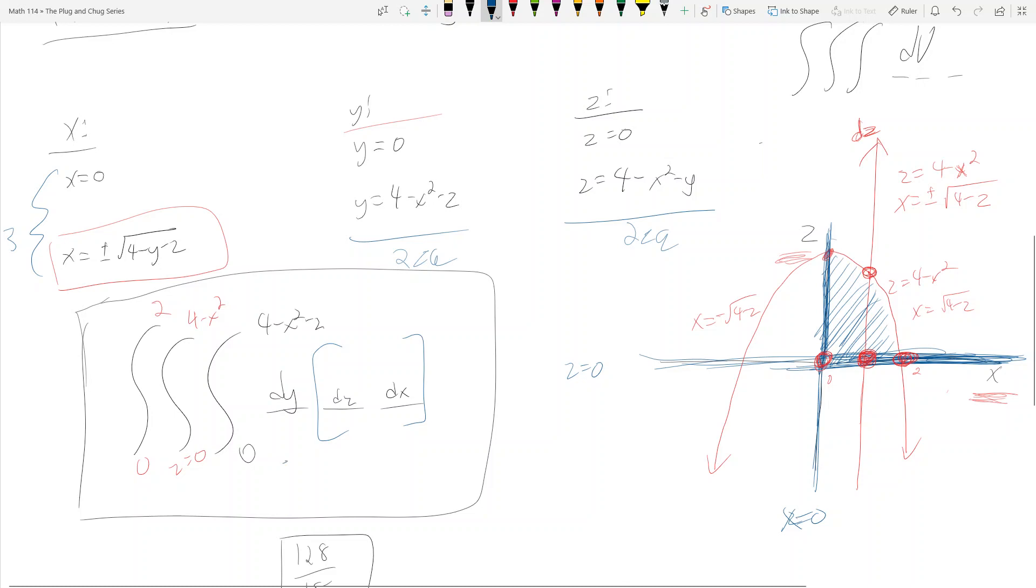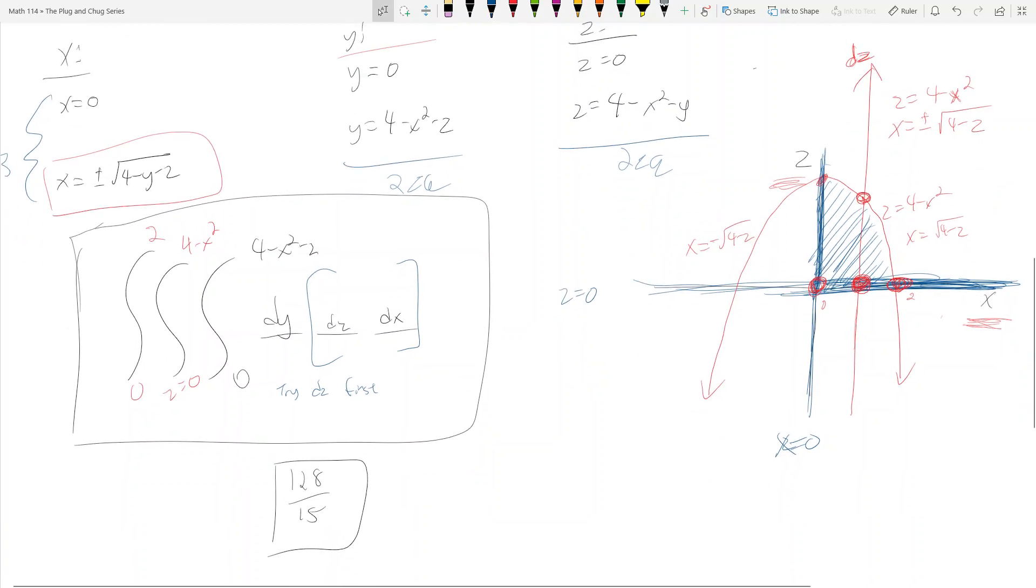I encourage you guys to set this triple integral up with different orders. Try dz first and see what you get, and see if you can evaluate that integral to be 128 over 15. So that's going to be it for chapter 15-5. Hopefully this video was more instructive than the previous one. They both go hand in hand, so it's not like the previous one was wasted at all. In the next video, I'm still trying to bring myself to do some moments and center of mass stuff. I don't know if I will, but we'll see if we do 15-6.